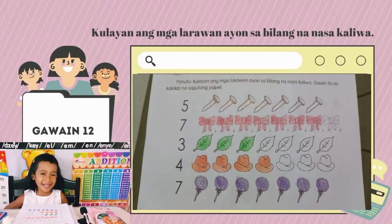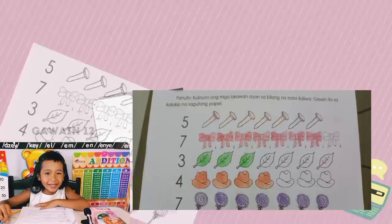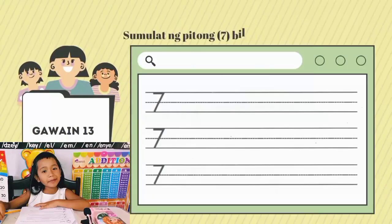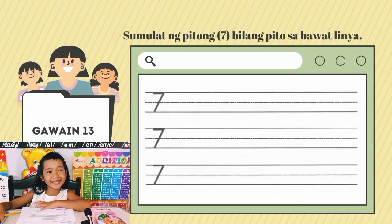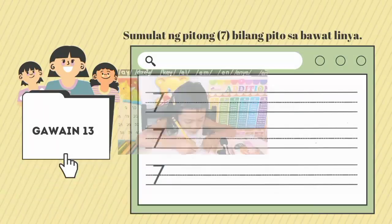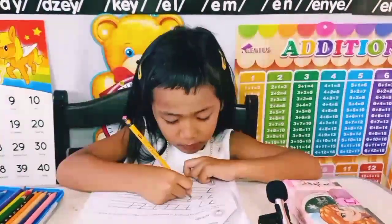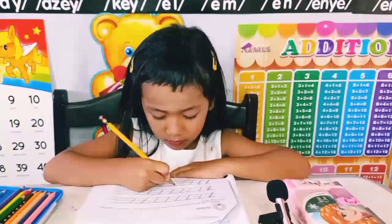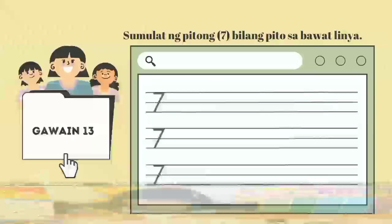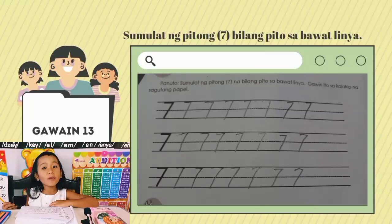Pagtambal ng mga larawan. Sumulat ng pitong bilang pito sa bawat linya. Tara, sulat na tayo. Ang bilang pito — pitong pito.